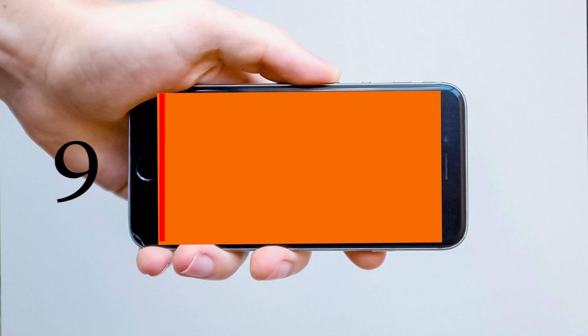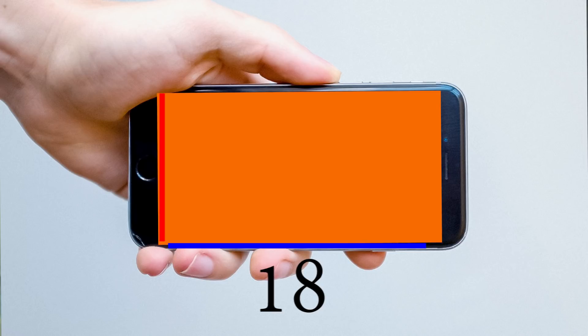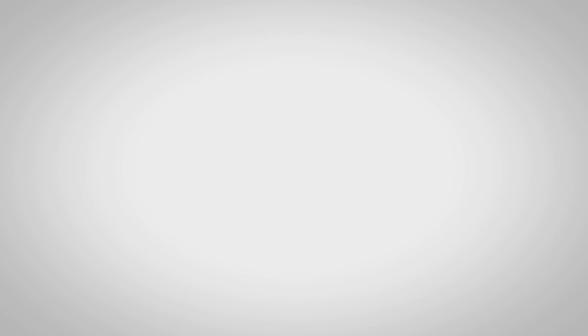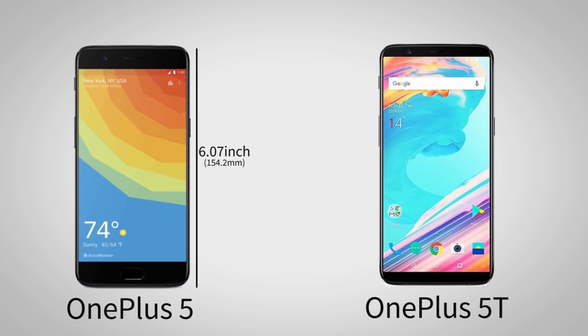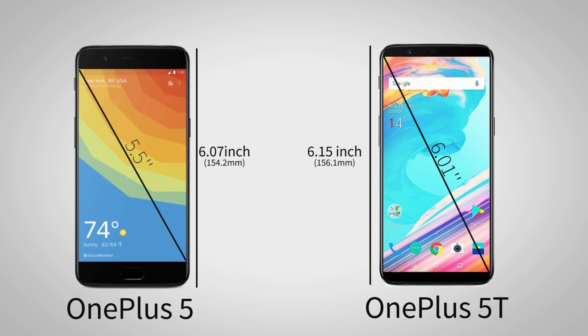This is the face — the face looks very low and lower on the display. This is the basic concept and definition of 16:9 and 18:9. This is the main difference between our displays. The OnePlus 5 has a 5.5 inch display and the OnePlus 5T has a 6.01 inch display.